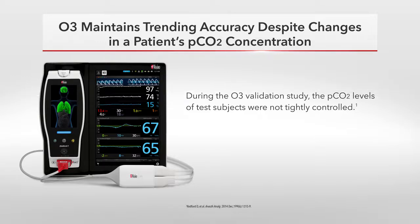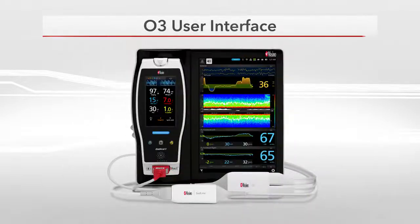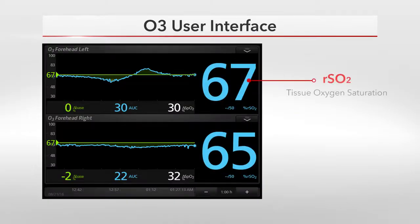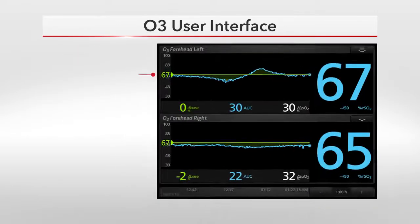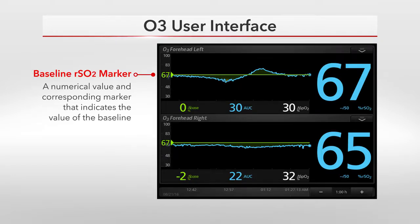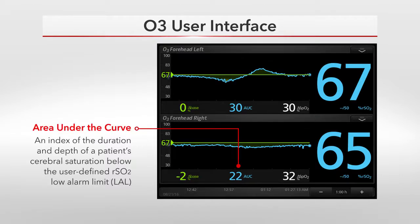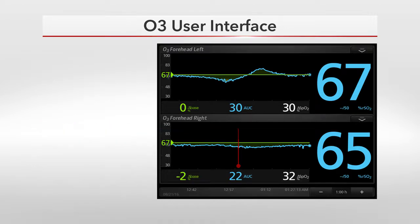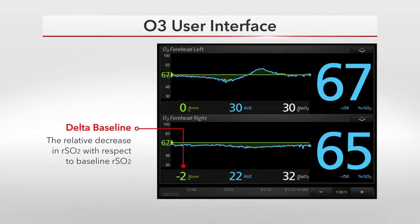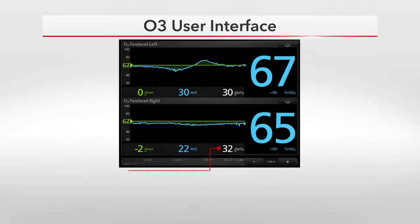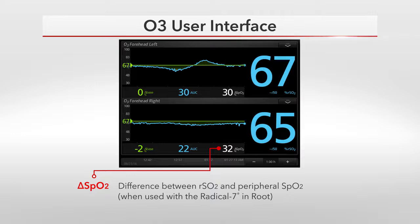During the O3 validation study, the PCO2 levels of test subjects were not tightly controlled. The O3 window on Root displays the RSO2 value, or tissue oxygen saturation; the RSO2 trend; the baseline RSO2 marker — a numerical value and corresponding marker indicating the user's set baseline; area under the curve, an index of the duration and depth of a patient's cerebral saturation below the user-defined RSO2 low alarm limit; Delta Base, the relative decrease in RSO2 with respect to baseline expressed as a percentage; and Delta SPO2, the difference between RSO2 and peripheral SPO2 when used with the Radical 7 on Root.